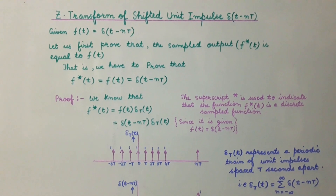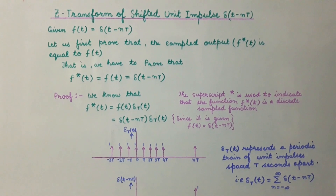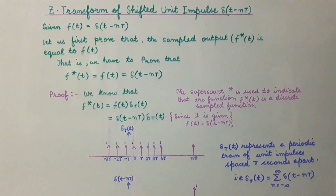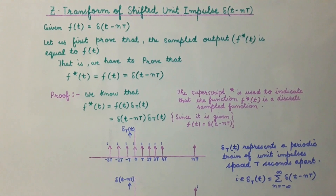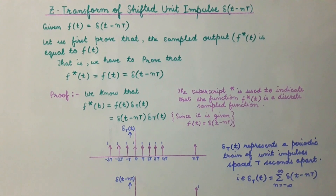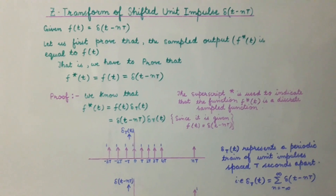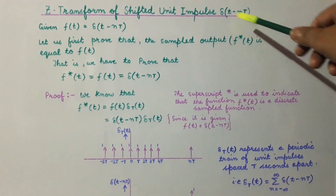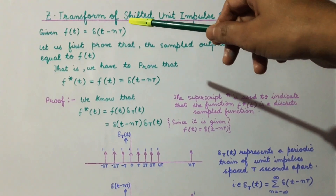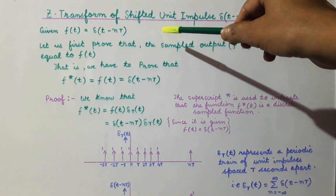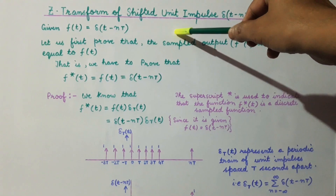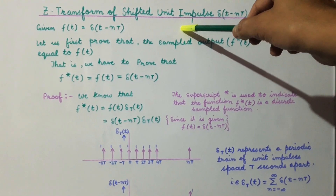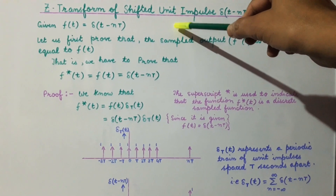Hello everyone, welcome to the Signal System class. In this presentation we will find out the Z transform of shifted unit impulse, that is delta(t - nT). We are given a function f(t) which is equal to delta(t - nT), which is a shifted unit impulse, and we are required to find out the Z transform of this function.